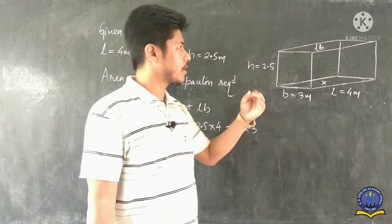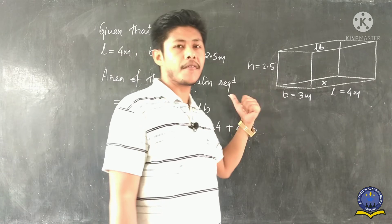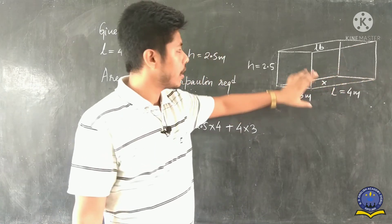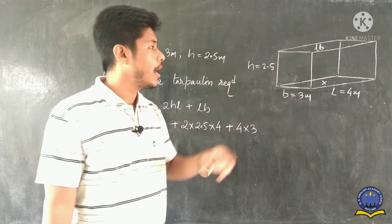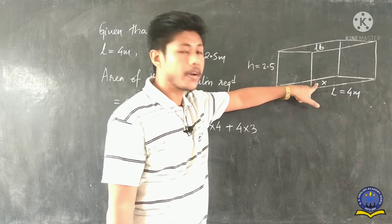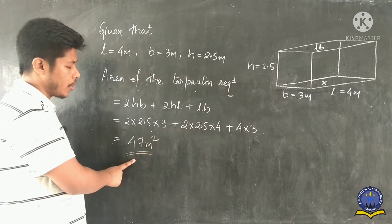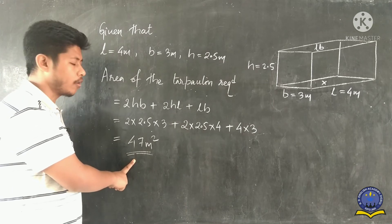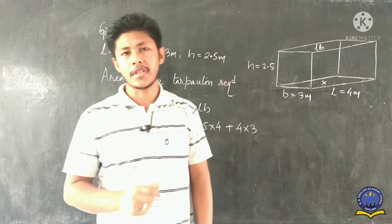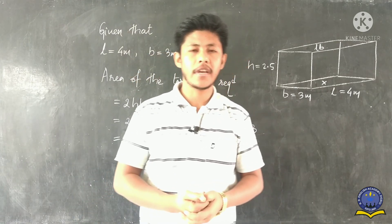Since the shelter is of box structure, we apply the surface area of cuboid formula: two times height×breadth, two times height×length, and length×breadth one time since the bottom part is open. From this we get the required area as 47 square meters. Exercise 13.1 has a total of eight questions, and we have done each one.